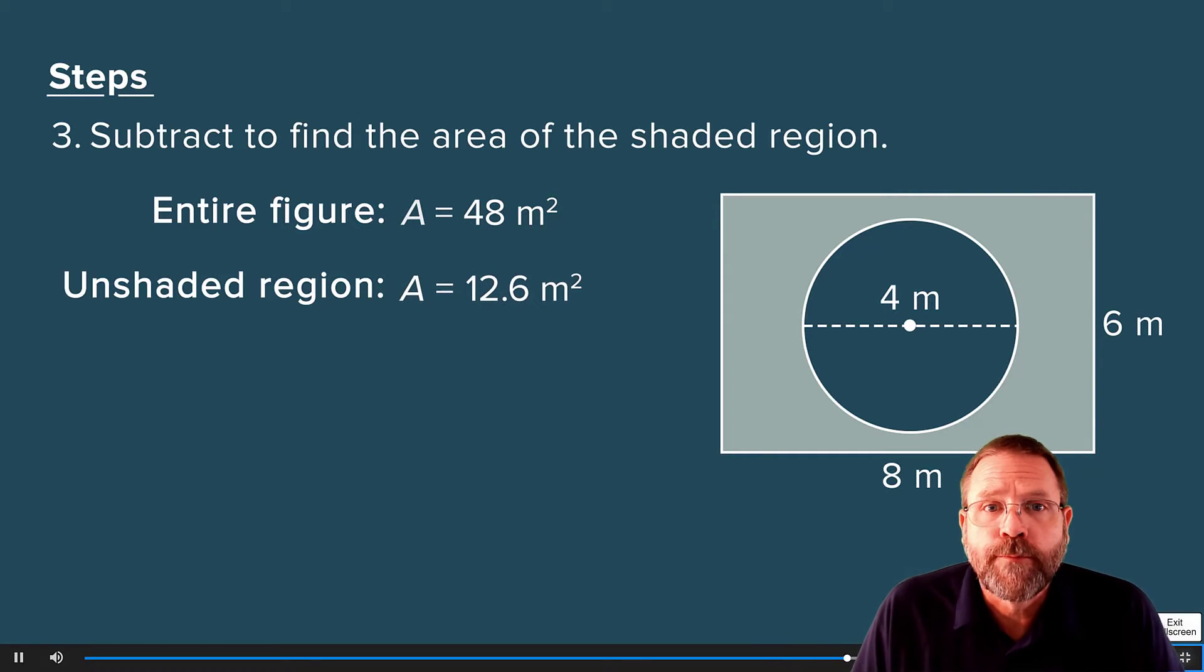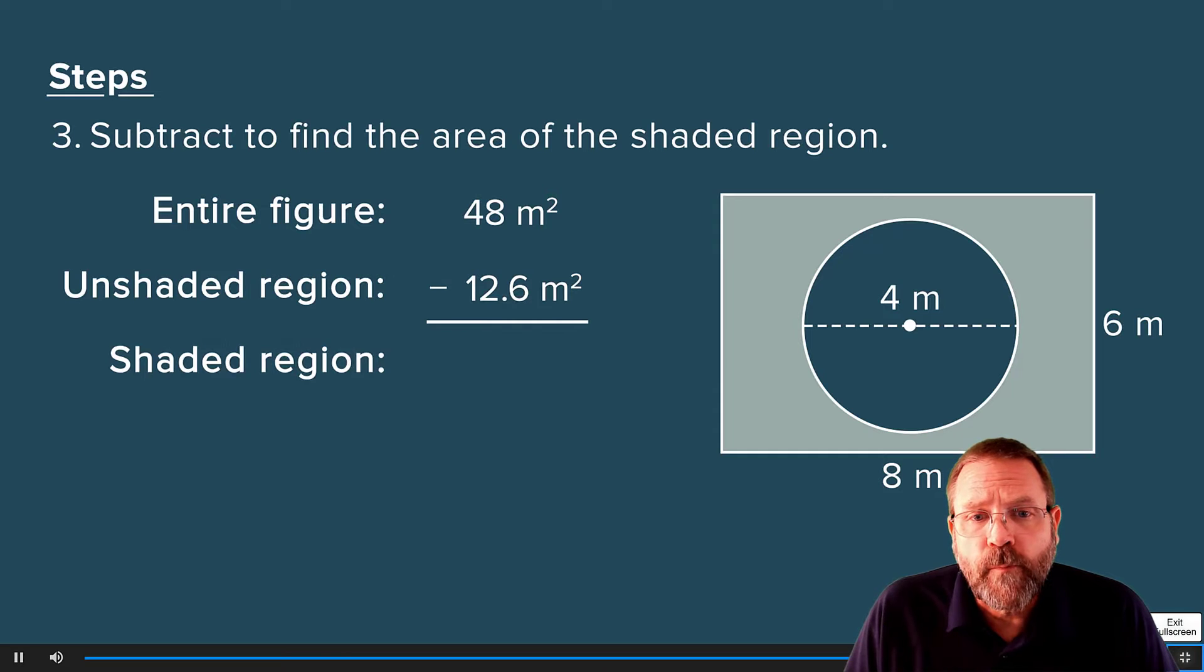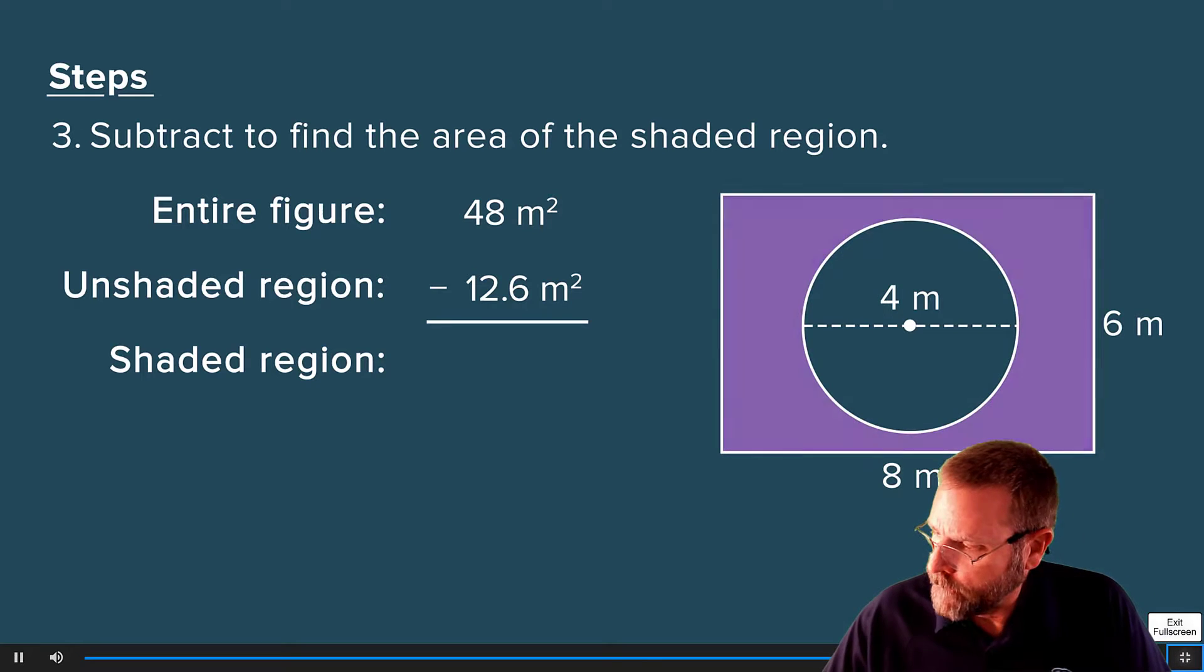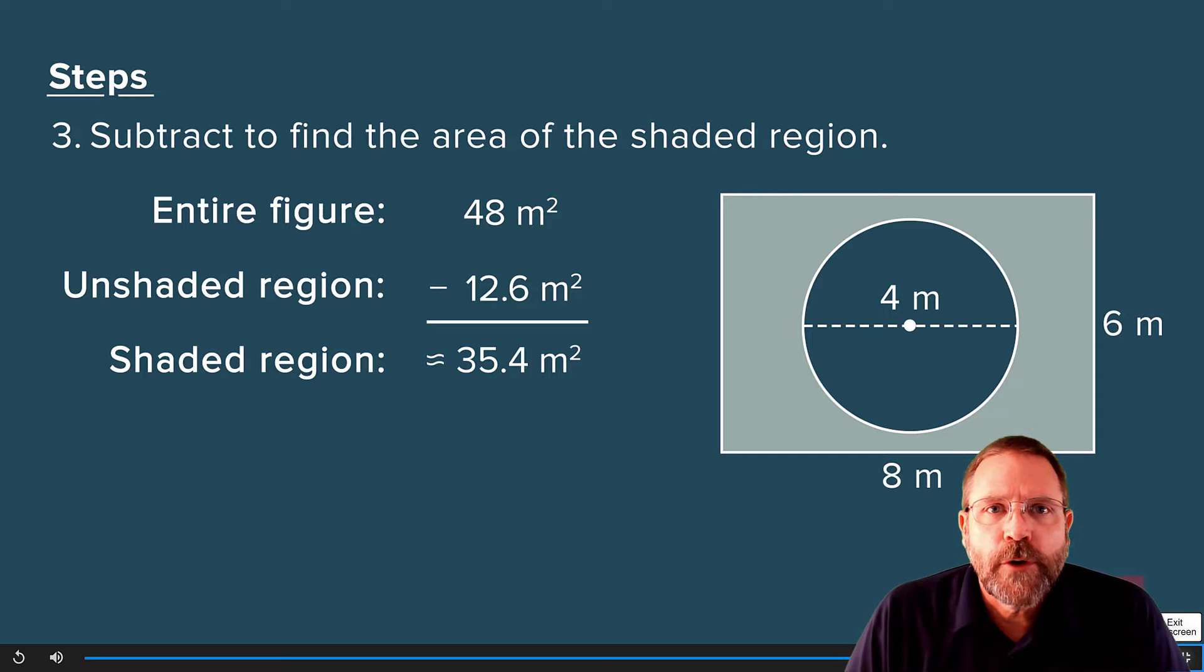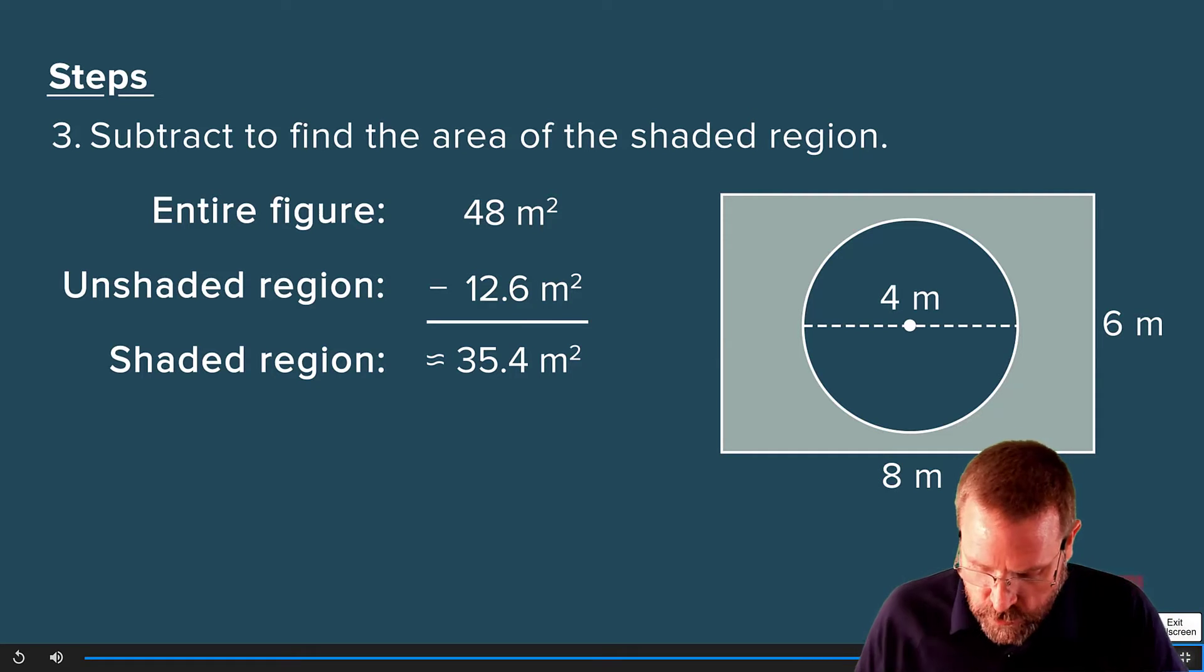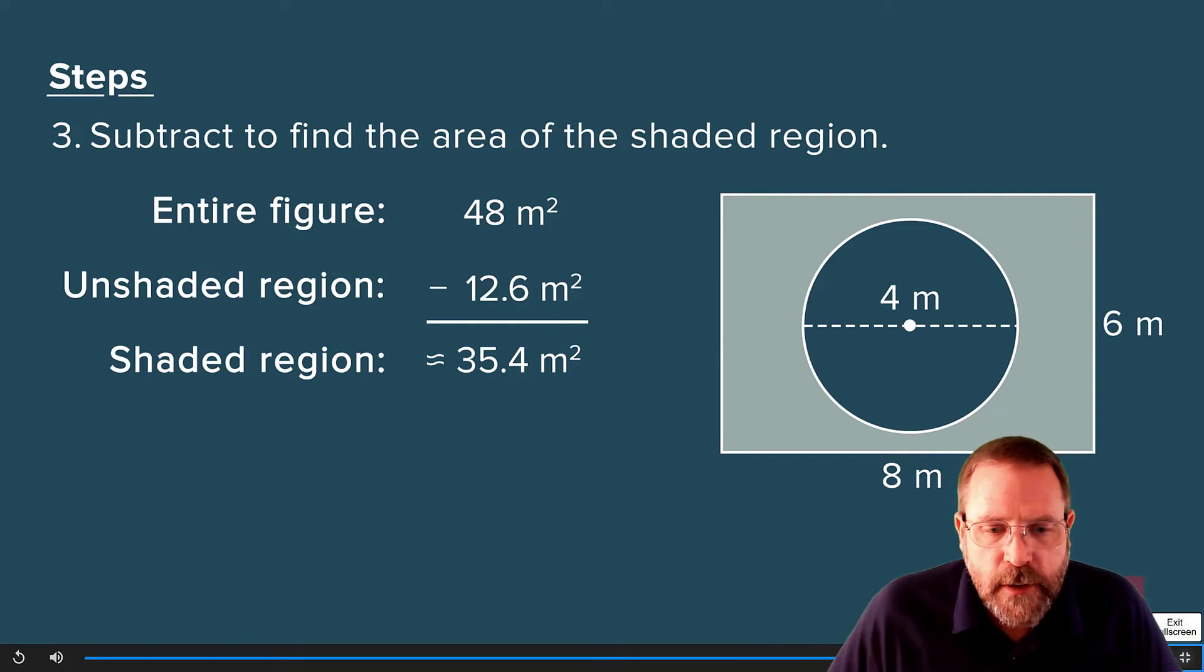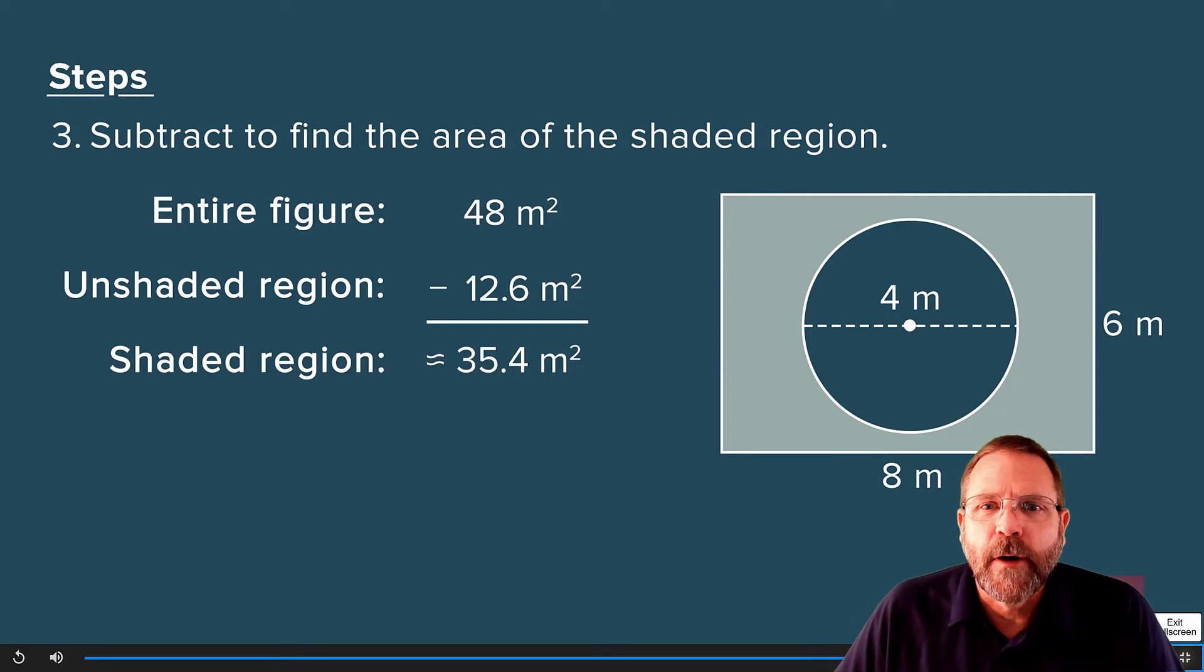Finally, find the area of the shaded region by subtracting the area of the unshaded region from the area of the entire figure. The area of the shaded region is approximately 35.4 square meters. Alright, that's pretty straightforward. Let's see what we can do on these types of problems ourselves.